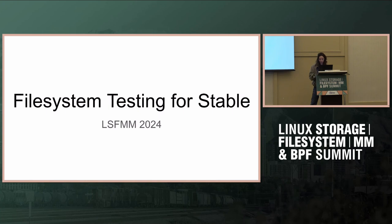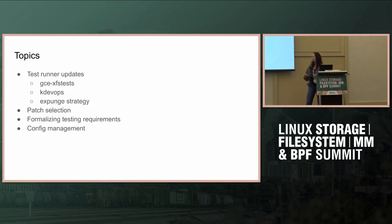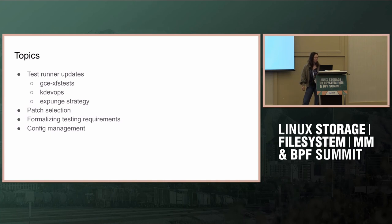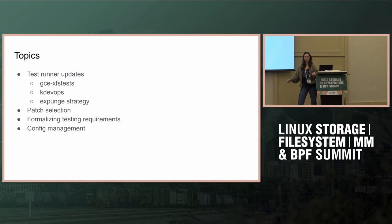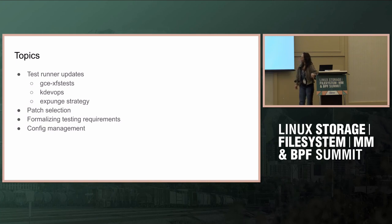I sent a proposal on the list and got a lot of suggestions and feedback, so thank you everyone who replied — I tried to aggregate everyone's ideas and added some of my own. The primary topics I wanted to cover were: test runner updates, things I've been working on or hope to work on with GC XFS tests; kdevops, though there may be a next session on that; expunge list strategy; patch selection, which still sucks; and formalizing exactly what's required, plus some config management to go along with that.